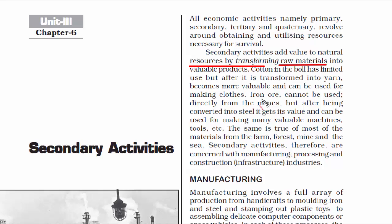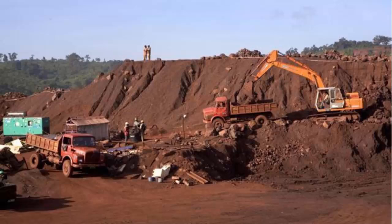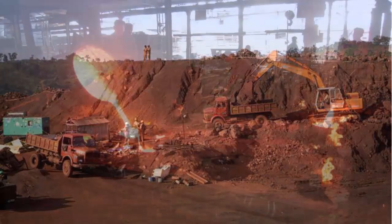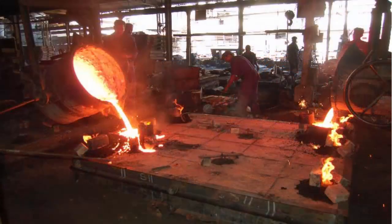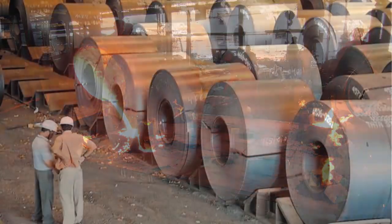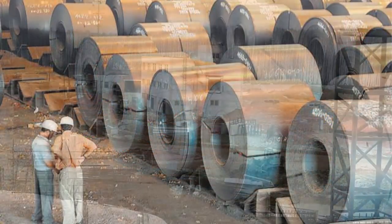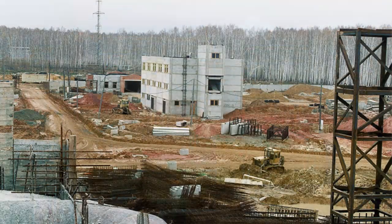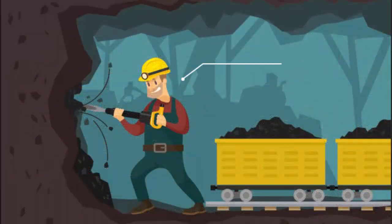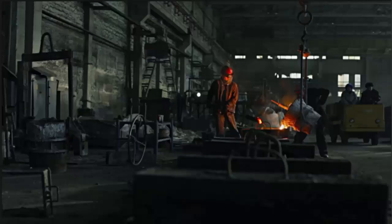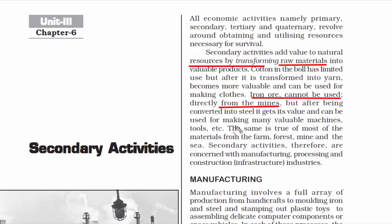Similarly, you can take an example of iron ore — a mineral that is found in mines. You cannot directly take it and use it. You need to first convert it into proper structured steel so that you can use it to build infrastructure. So extracting from the mine is the job of the primary sector, and converting that into solid steel is the job of secondary activities. The final conclusion is that people working in secondary activities add value to the product.